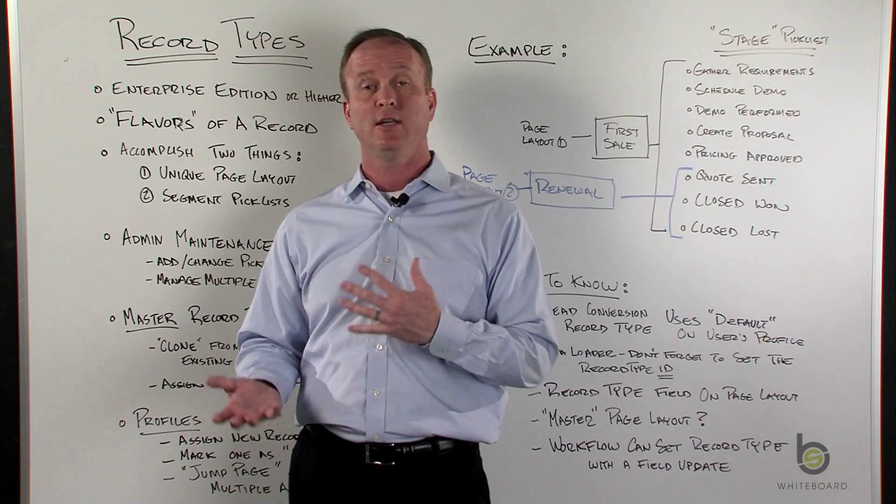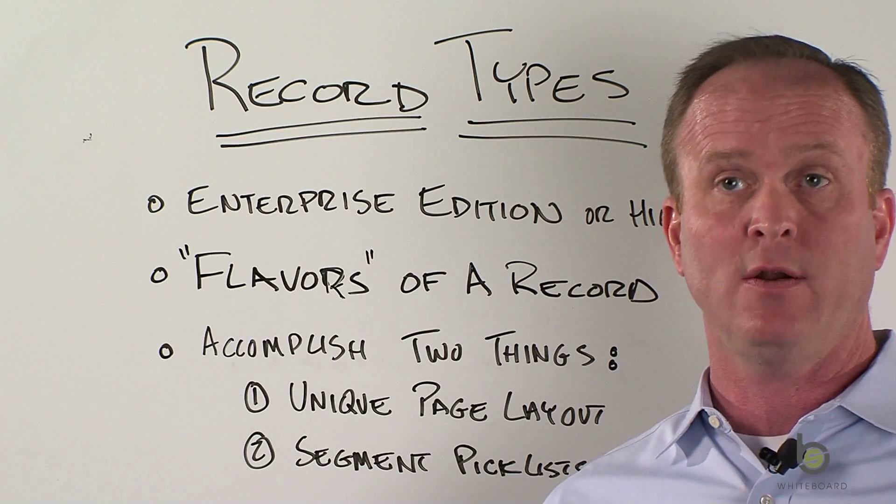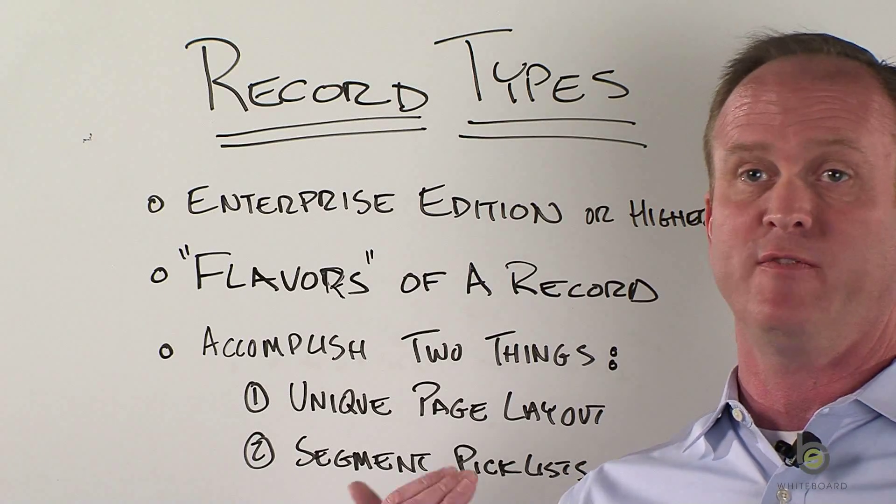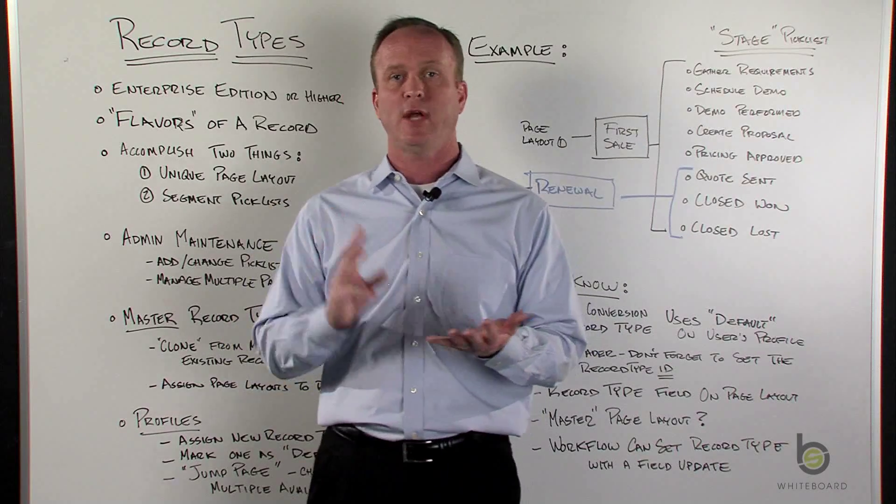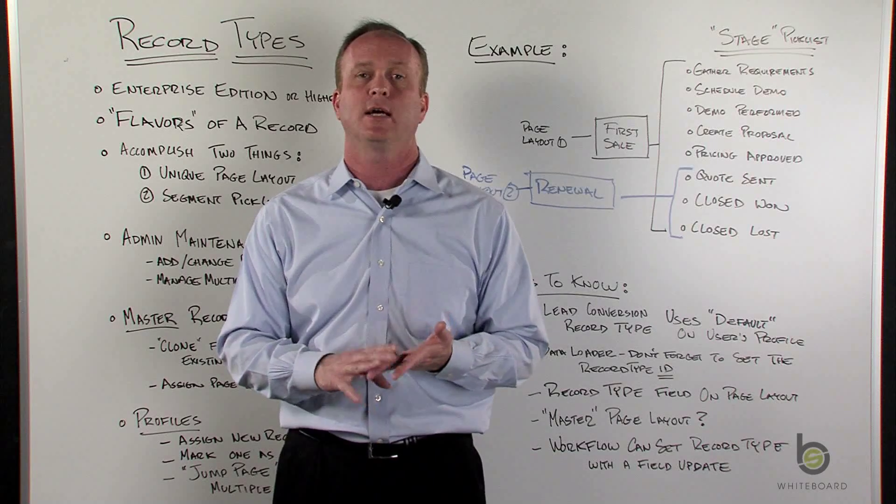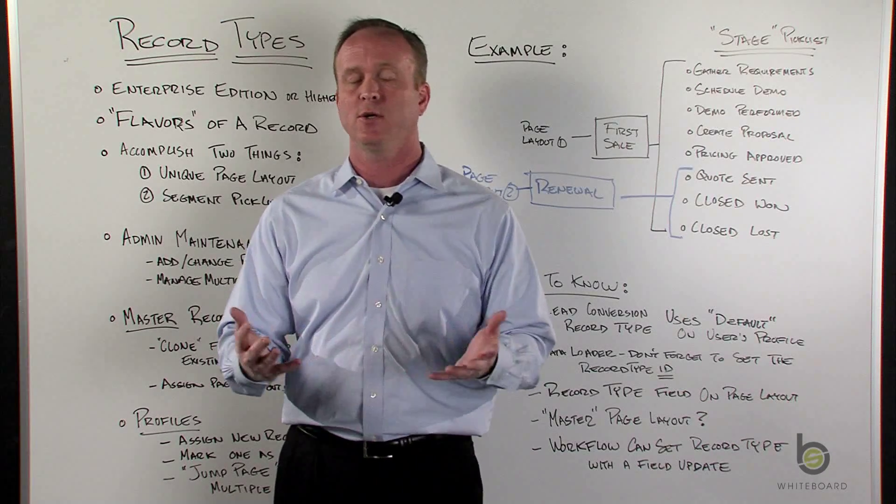And you may want to track different fields and have a different page layout, or you might have different picklist values and different processes for those different flavors of records. You can have record types against standard objects - your leads, accounts, contacts - as well as custom objects that you create.